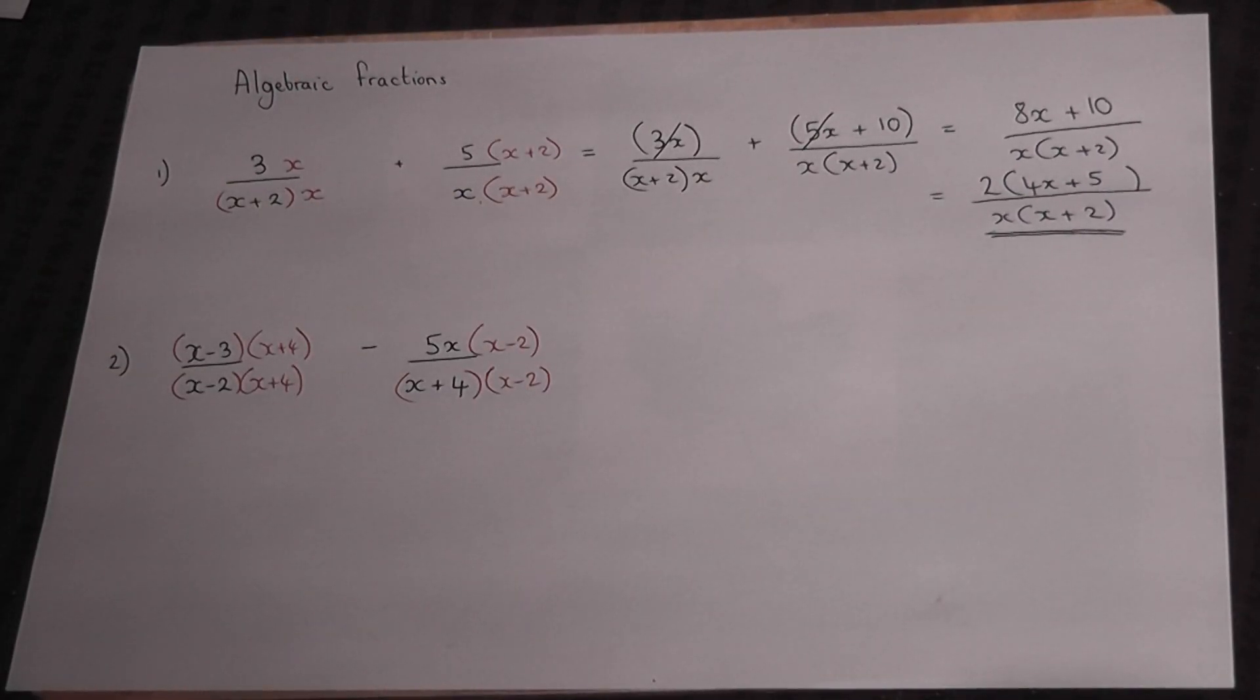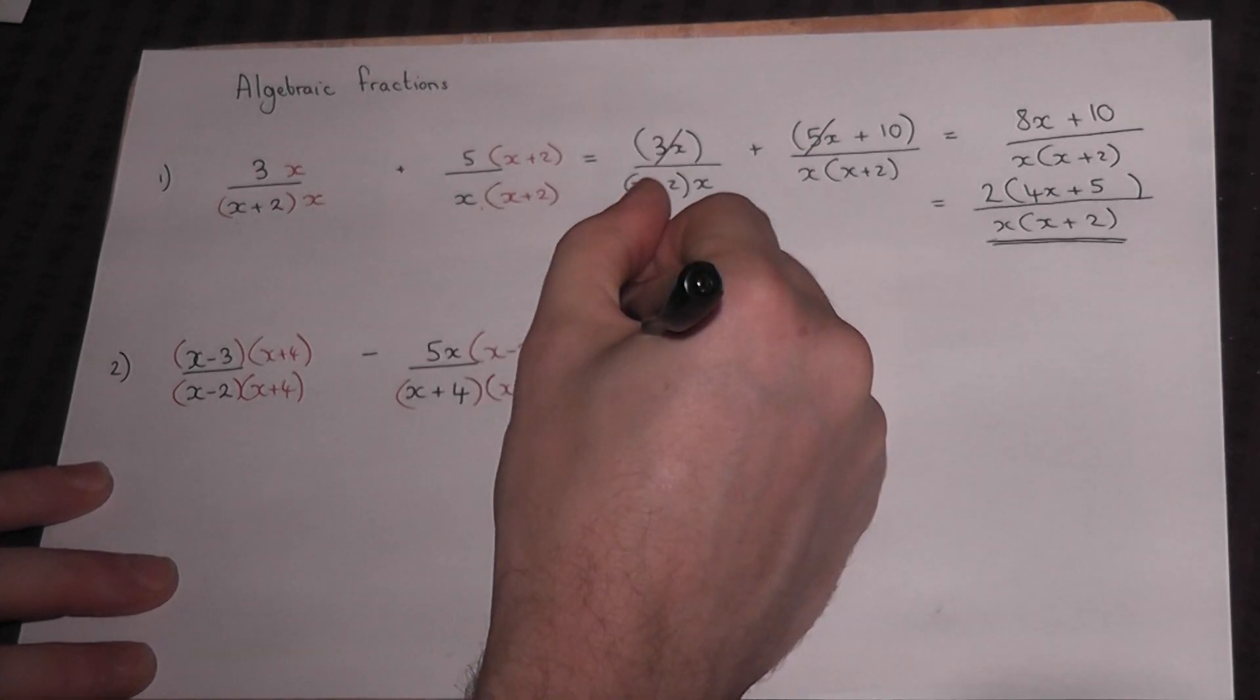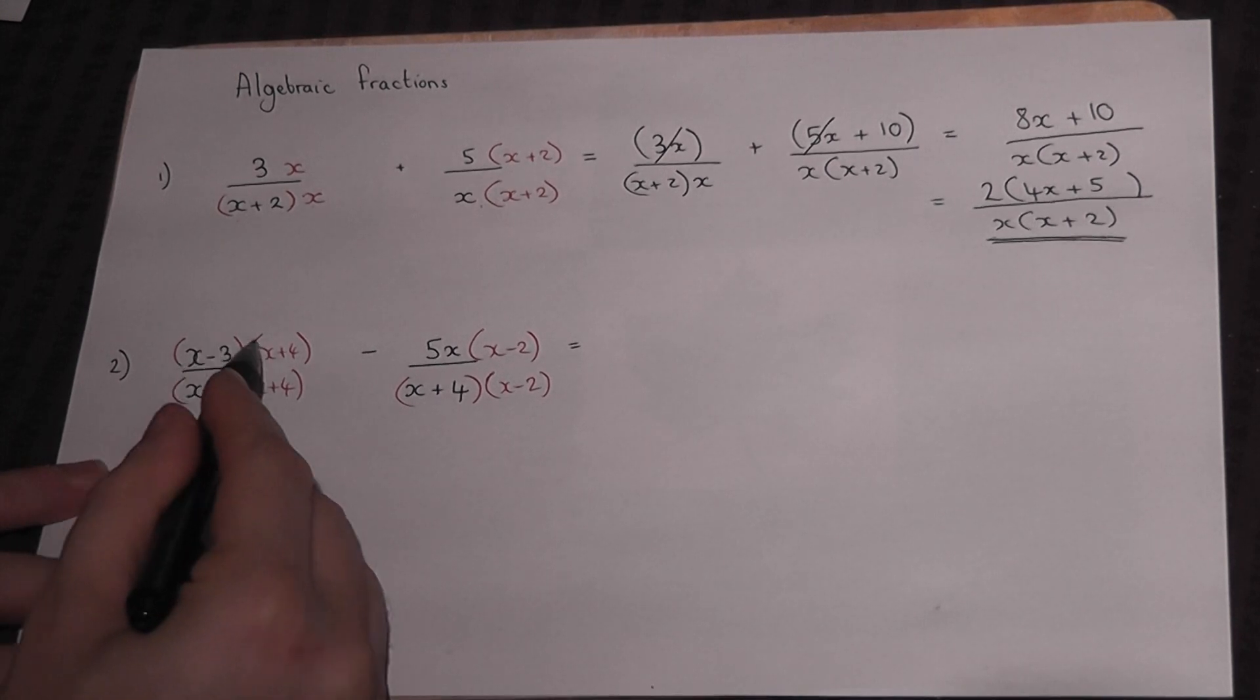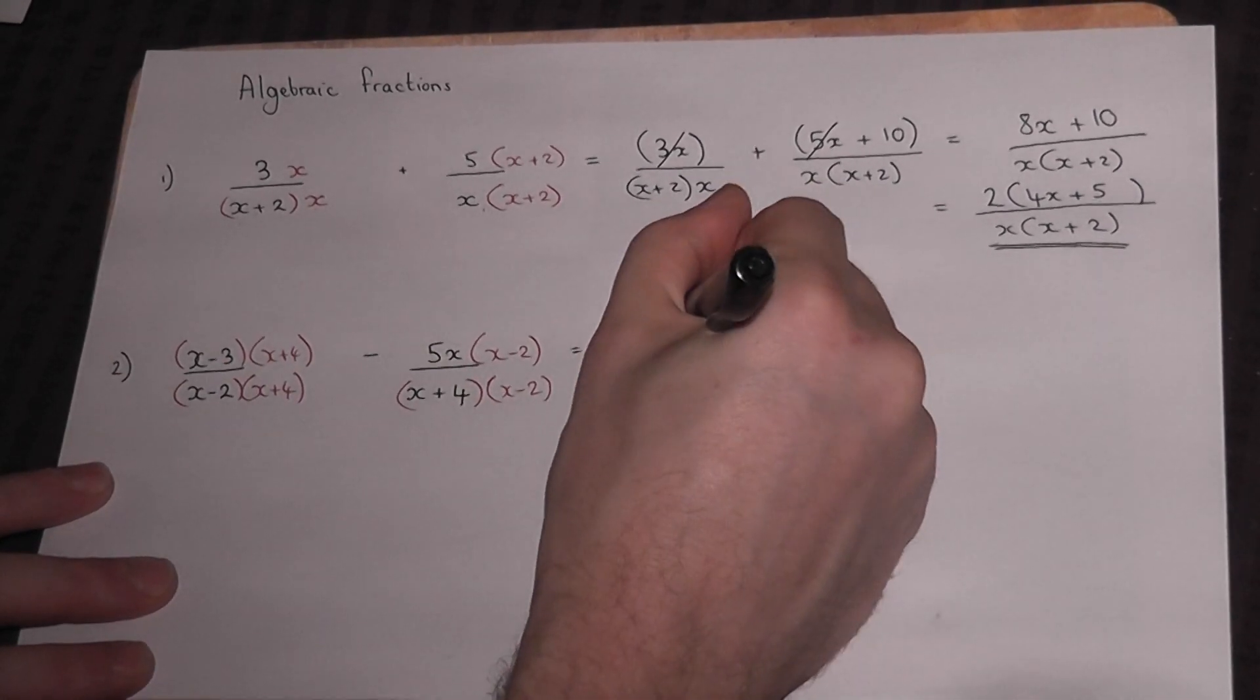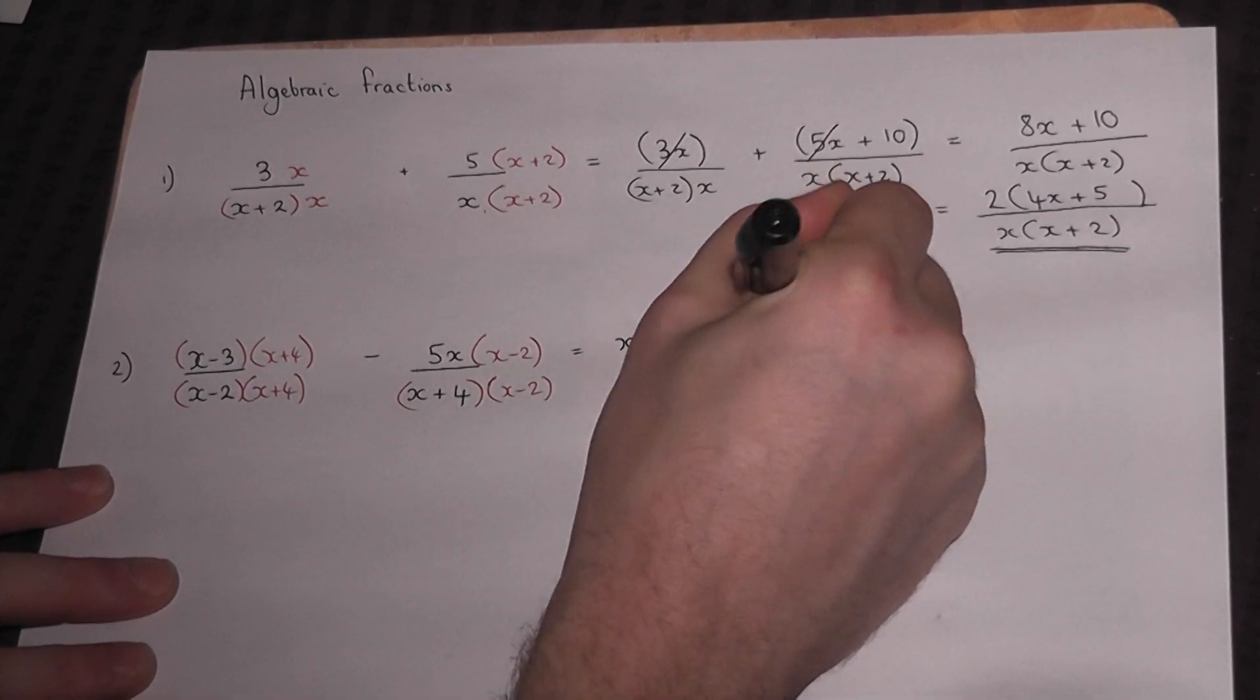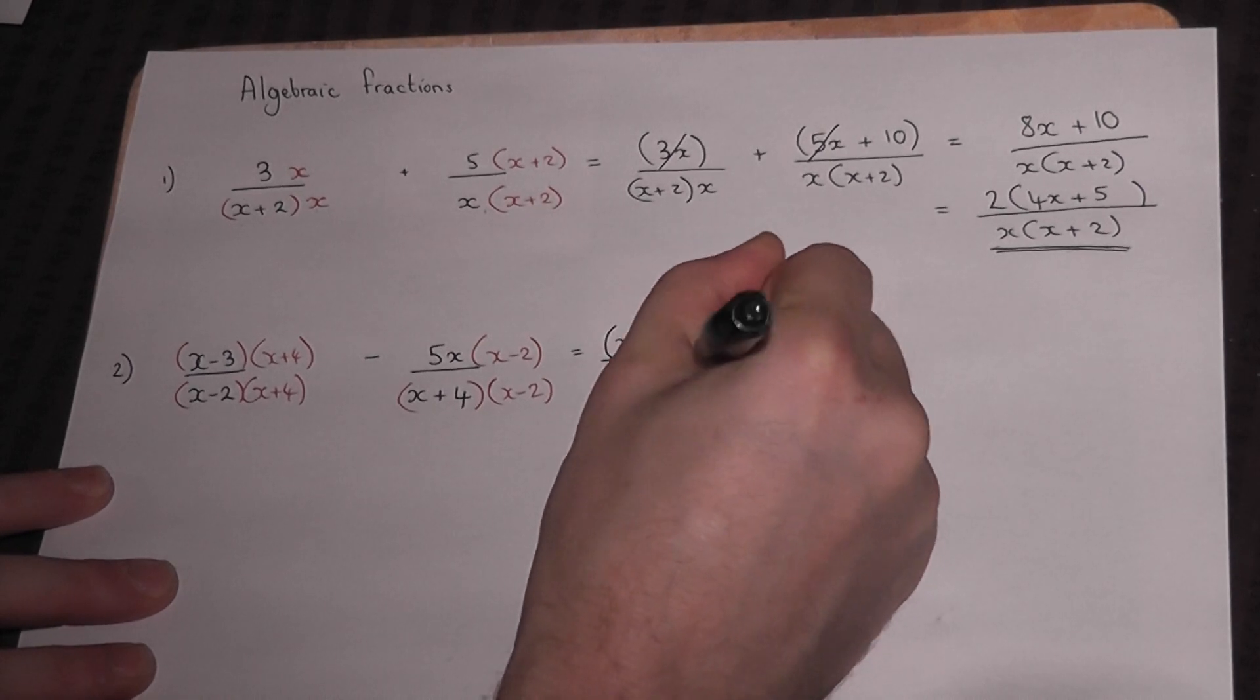That's the first step. The second step is to expand both numerators, leaving the bottom as it is and placing the top in brackets once worked out. This is expanded using either a smiley face, FOIL, or a grid method. x times x is x², minus 3x plus 4x is 1x, minus 3 times 4 is minus 12. Place it in a bracket and write it all over (x-2)(x+4).